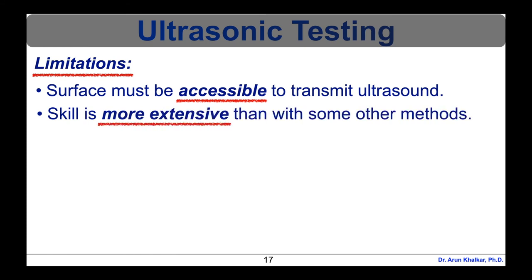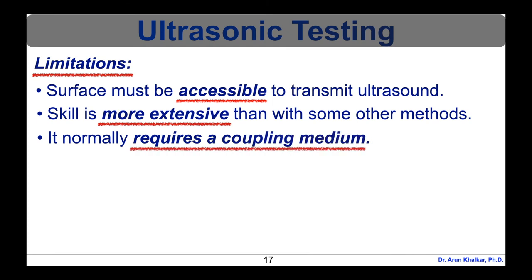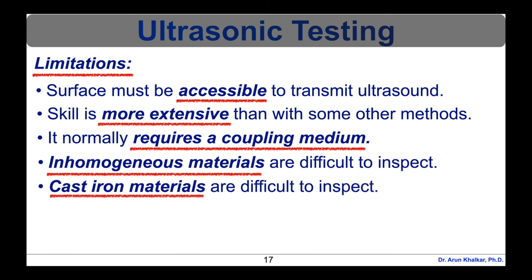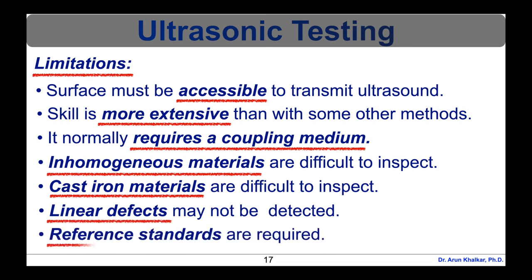Limitations include: surface must be accessible to transmit ultrasound; skill and training is more extensive than with some other methods; it normally requires a coupling medium to promote the transfer of sound energy into the test specimen; materials that are rough, irregular in shape, very small, exceptionally thin, or not homogeneous are difficult to inspect; cast iron and other coarse grain materials are difficult to inspect due to low sound transmission and high signal noise; linear defects oriented parallel to the sound beam may go undetected; reference standards are required for both equipment calibration and the characterization of flaws. These are the several limitations of ultrasonic testing.